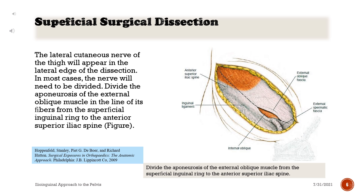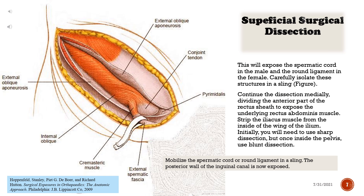Divide the aponeurosis of the external oblique muscle in the line of its fibers from the superficial inguinal ring to the anterior superior iliac spine. This will expose the spermatic cord in the male and the round ligament in the female. Carefully isolate these structures in a sling.